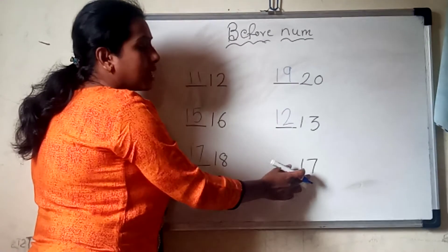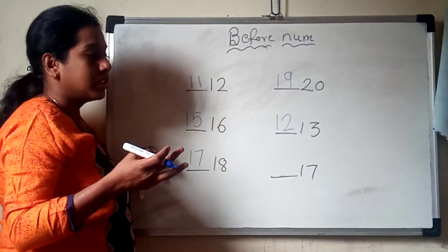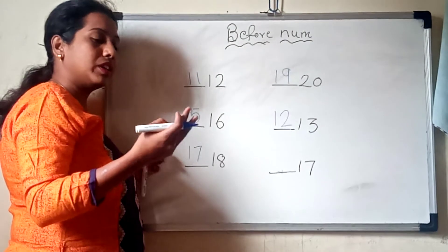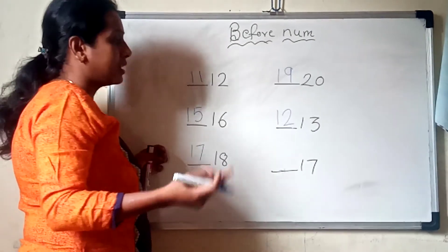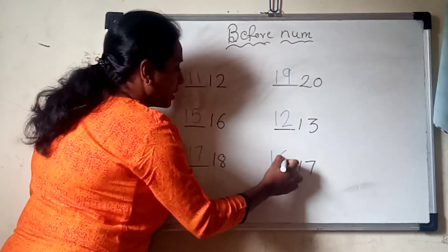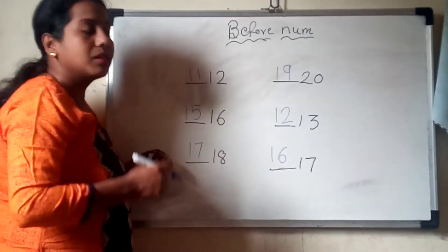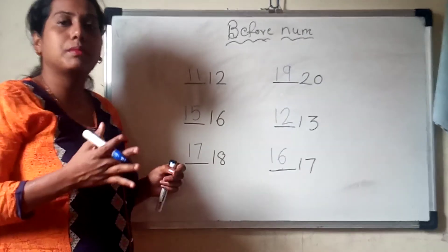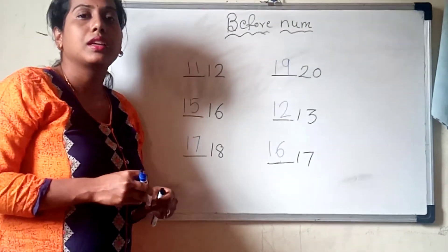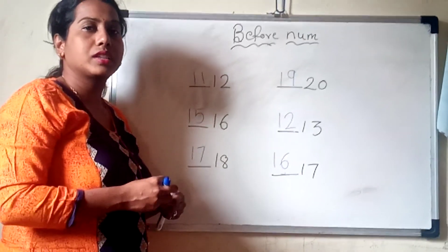Yes, and next 17 — count: 11, 12, 13, 14, 15, 16, 17. So 16 will come here. Yes. These are the before numbers — which number comes before the given number. Thank you.